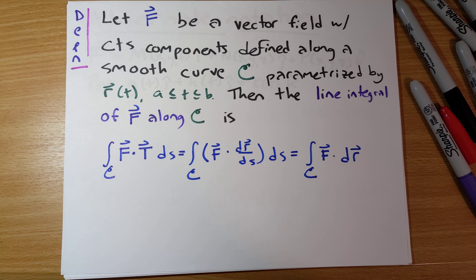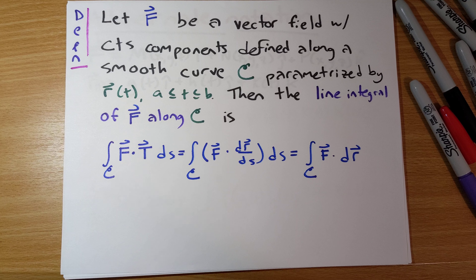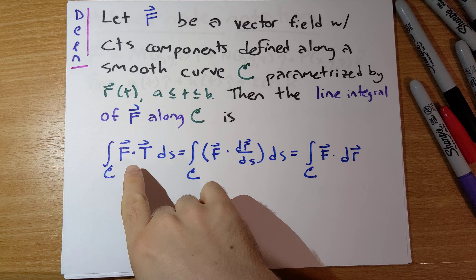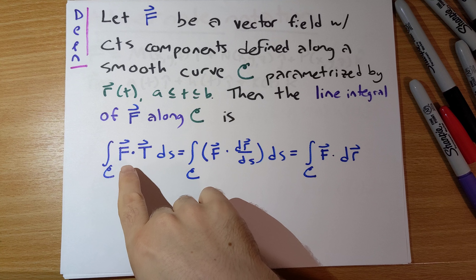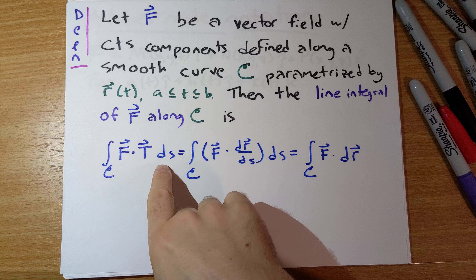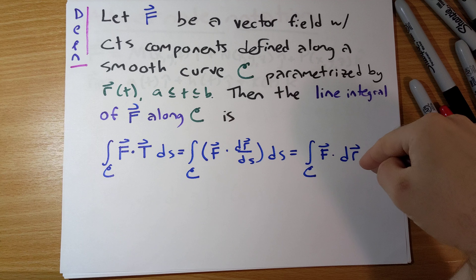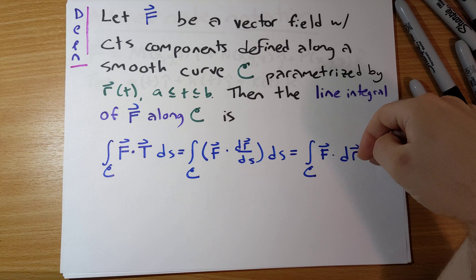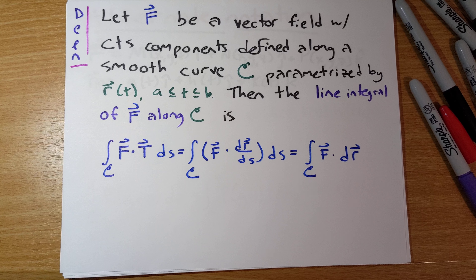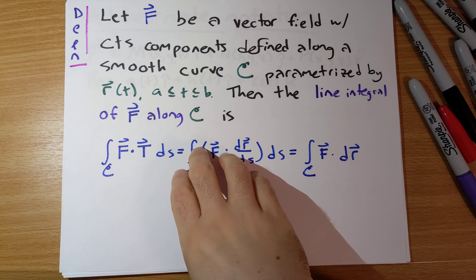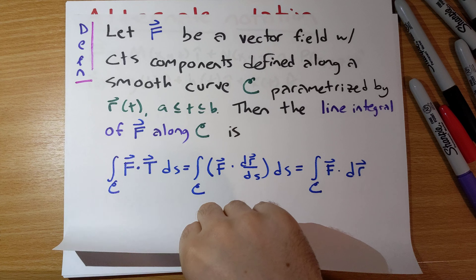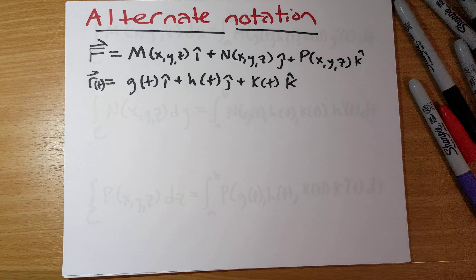Here is our original definition of a vector line integral. We have two notations: the integral of f dot T ds, and the integral of f dot dr. This is the way I usually write it. In this video, I want to talk about an alternative notation that sometimes gets used.